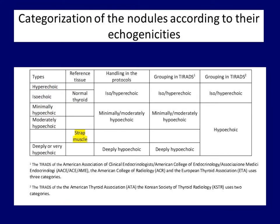The other distinction is based on comparison with the strap muscle. If a hypoechoic nodule is less dark than the strap muscle, it should be considered minimally to moderately hypoechoic. If the lesion is darker than the strap muscle, the nodule is deeply hypoechoic.